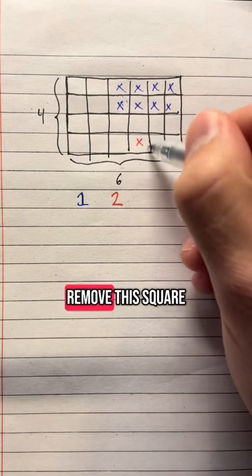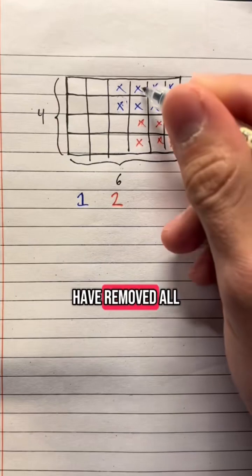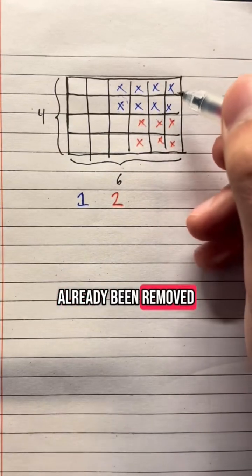Player two can then choose to remove this square, which would then remove all of these squares and would also have removed all of these squares as well had they not already been removed from the game.